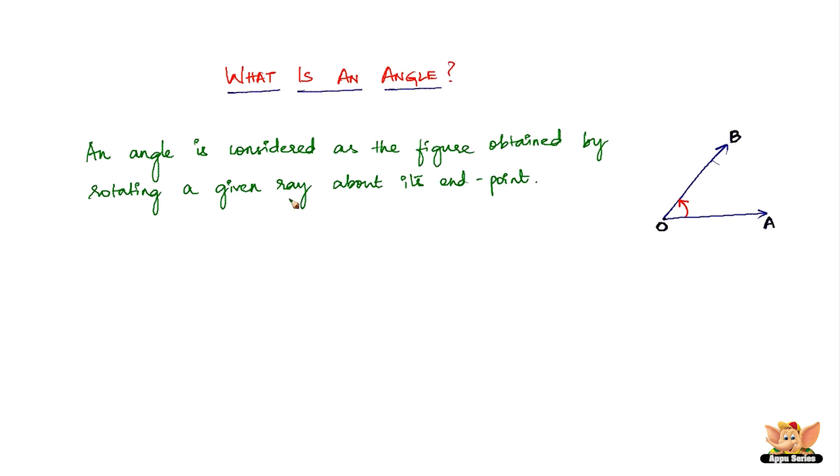An angle is considered as a figure obtained by rotating a given ray about its endpoint—exactly what we did here. The given ray was OA and it was rotated.